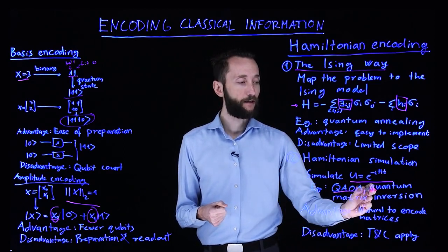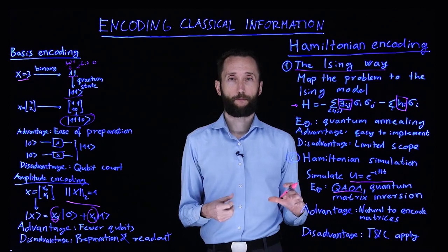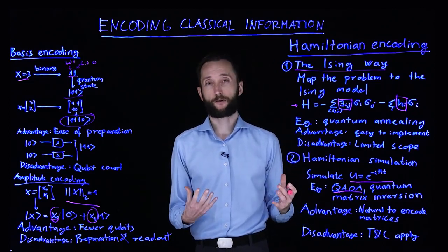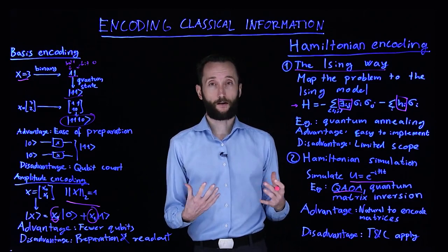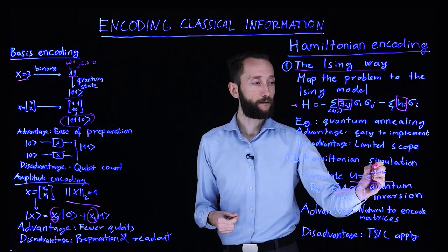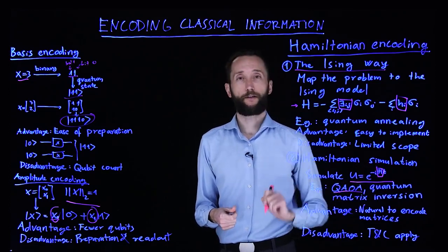And a very important subroutine in many idealized quantum machine learning algorithms is quantum matrix inversion. And it does the exact same thing. It encodes the matrix to be encoded here in the Hamiltonian. So the advantage of this is exactly this. It's very natural to encode the matrix in this formalism.